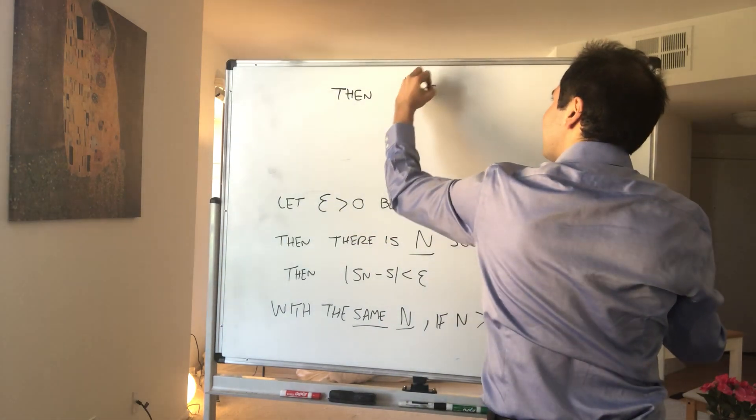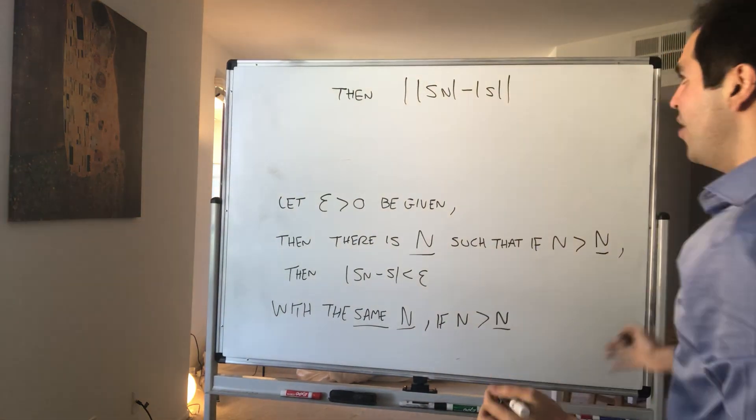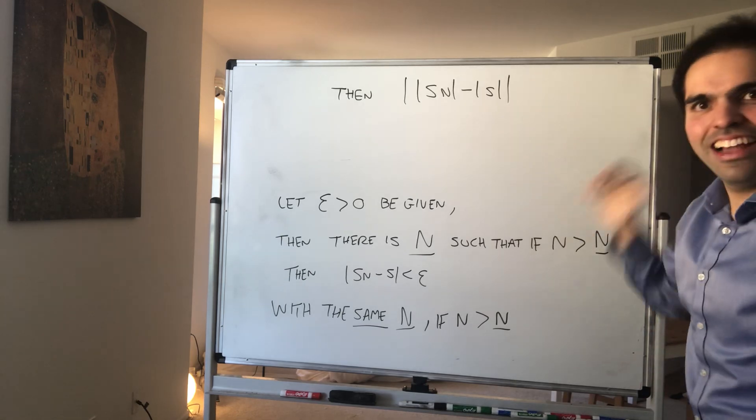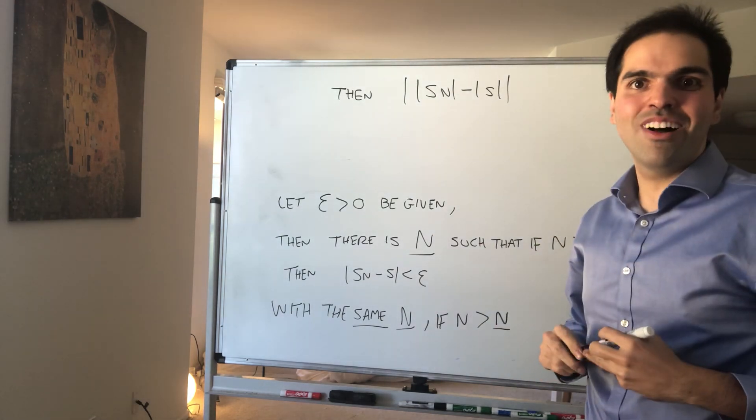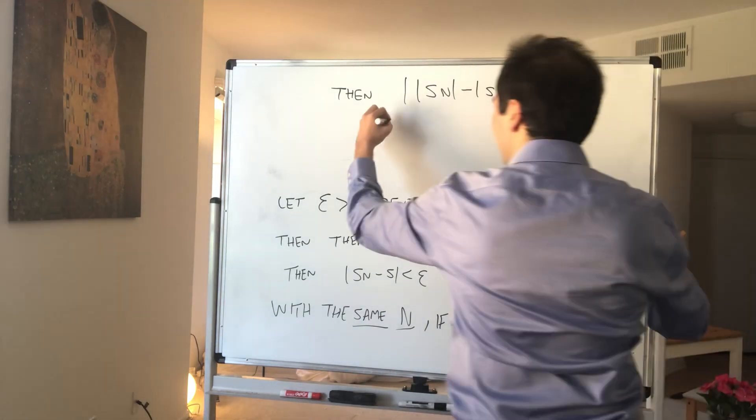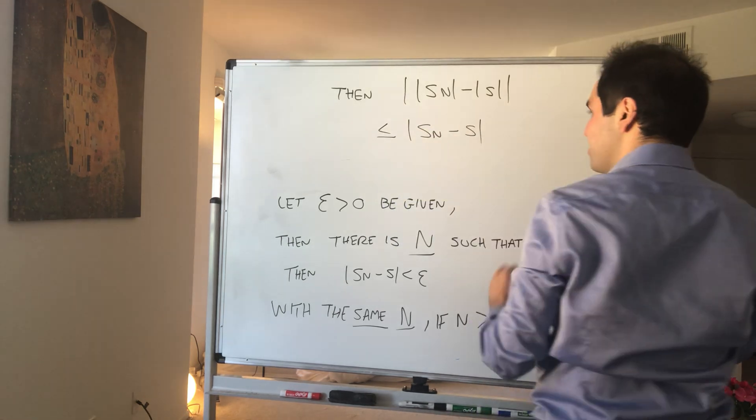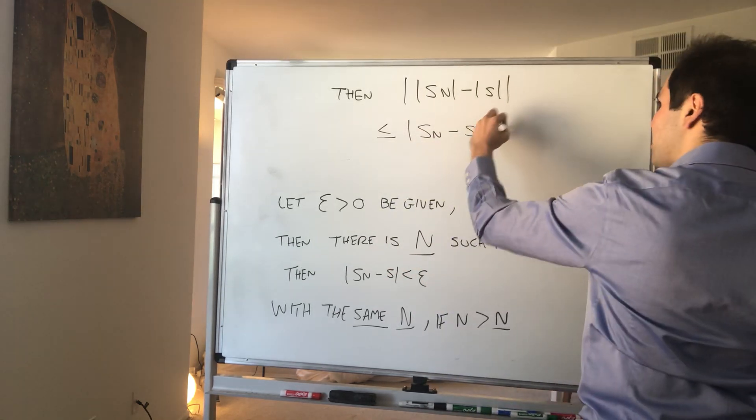Then again, the difference between the absolute values. Well, you want to show it's less than or equal to something, and there's a very useless inequality that's very useful here, actually, which is the reverse triangle inequality. So this is less than |s_n - s|, but we know that this is less than epsilon.